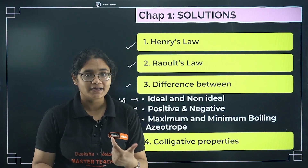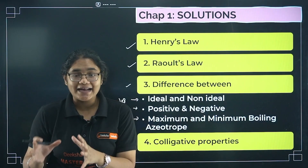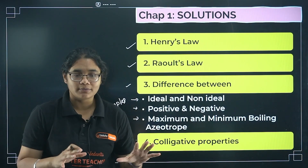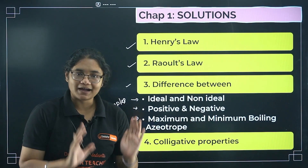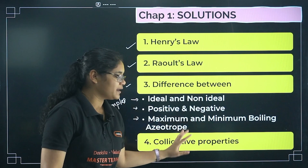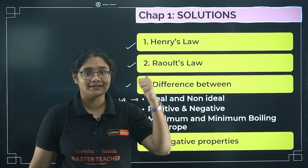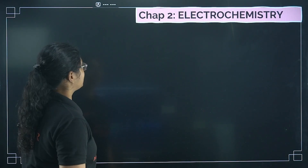Next, colligative properties — there are four colligative properties. Practice numericals; I've made a detailed video on all the possible numericals that will be asked, so you can revise that video. Your numerical section from colligative properties is done.